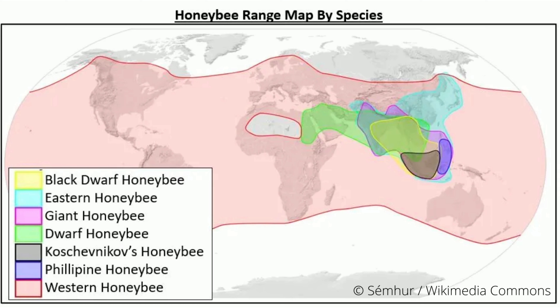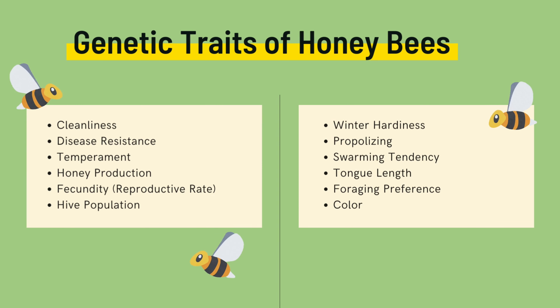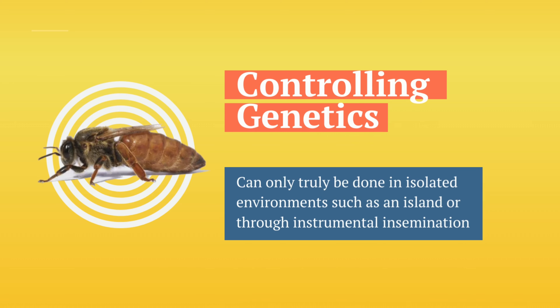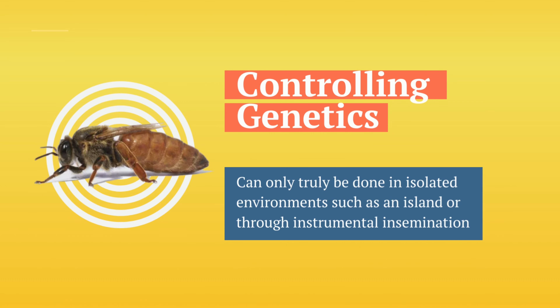You'll notice there's a little overlap in the types of honeybees and where they live within the world. The western honeybee is by far the most widespread. You've also got eastern honeybees, giant honeybees, and dwarf honeybees — several honeybees that live in targeted areas of the world. Since bees have grown and evolved in so many different environments, there are a variety of genetic traits expressed in certain regions and genetic lines. Some of these traits include cleanliness, disease resistance, temperament, production, population, winter hardiness, the amount of propolis they collect, tongue length, their preference for flowers, and their body color.